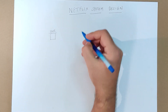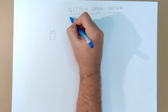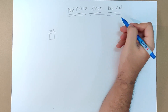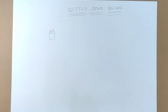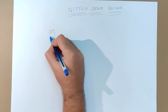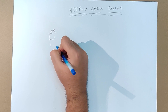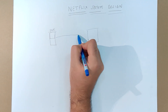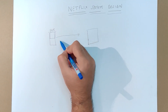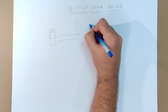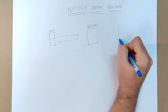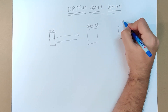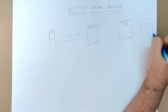Someone in the comments asked me to create a video on OTT platform system design, so here is a video on Netflix system design. Let's start with the basic flow. Suppose this is a user. When the user first makes a call, it would go through some gateway, and behind this gateway there will be the actual Netflix servers, and behind this will be the database.